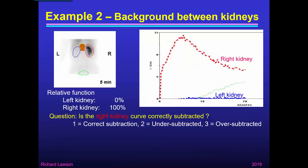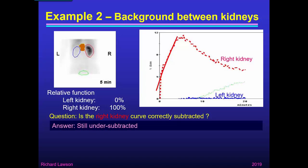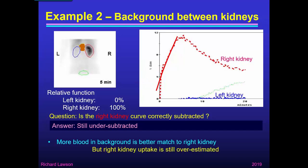Let's try something else. I've taken a brown background region above and between the kidneys, which has some blood and some tissue over the aorta. Looking at the right kidney curve — if we extrapolate it, it still ends up starting above zero, so there is still blood background present. There's more blood in this background region than in the previous one under the kidney, so that's a better match to the right kidney, but the right kidney uptake is still overestimated.